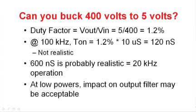So if you look at running a buck regulator at 1% duty factor in a 100 kHz operation, you'll see that you need an on-time in the power switch of about 120 ns. This is probably not realistic at these high voltages due to the switching time limitations of the MOSFETs. Probably a more realistic goal for the on-time is 600 ns, and so at 600 ns on-time, it means that you'll be operating at about 20 kHz. Typically, these kinds of systems have relatively low output powers, and the impact on the output filter may be acceptable.